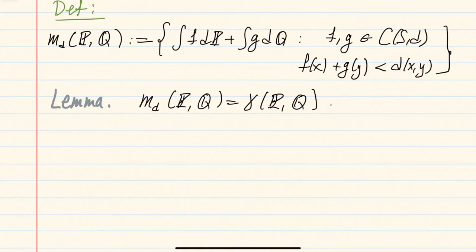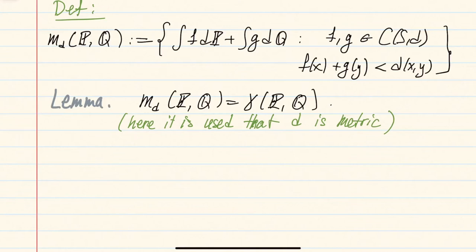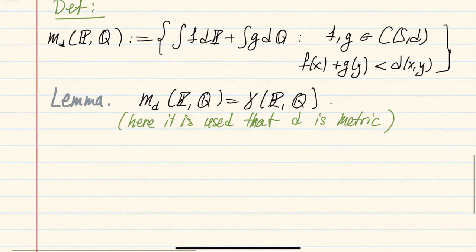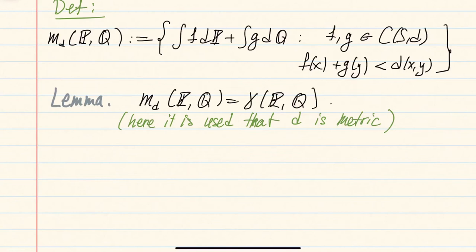It is important to emphasize that proving M_d equals gamma uses in an essential way that d is a distance satisfying the triangle inequality. However, when proving the Kantorovich-Rubinstein theorem by comparing W with M_d directly, the triangle inequality is not used. This allows us to extend the result to more general situations, while the comparison of W with gamma requires d to be a metric.